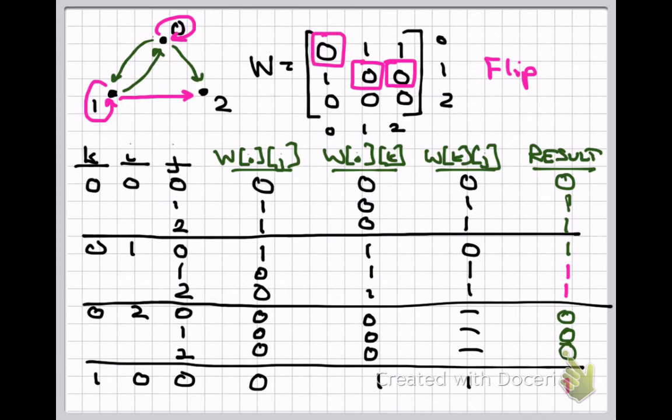That's the last run through the algorithm covered in this video. There are 17 more steps, but you will find that no more bits are changed — all the bits that needed to be 1 have already been flipped, and no more links amongst the nodes will be discovered. That concludes this video on Warshall's algorithm. Thanks for watching.